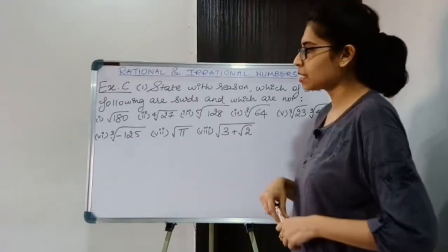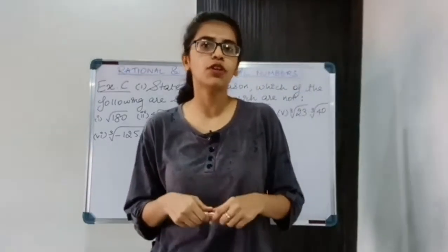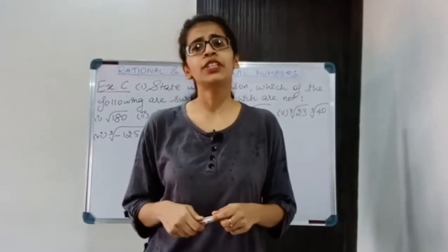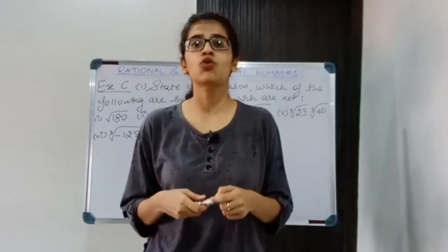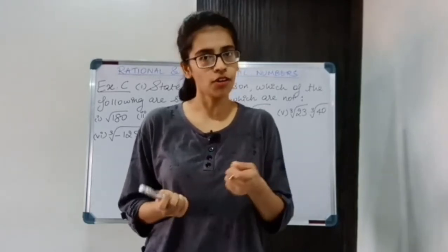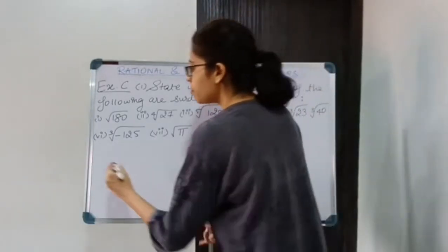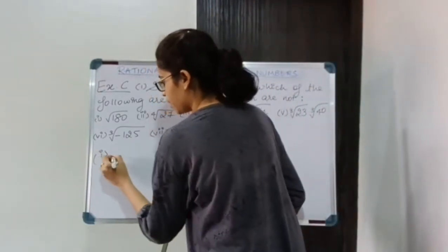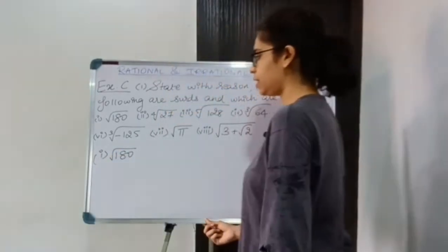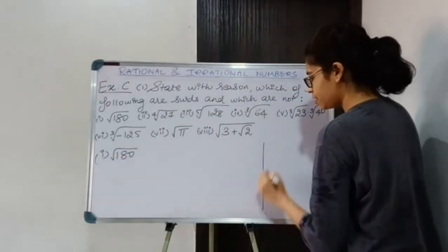You are given some roots and you have to find out which of them are surds and which are not. To do that we have to solve them and then we will know whether they are surds or not. Starting with the first number: it is square root of 180. I will factorize it first.